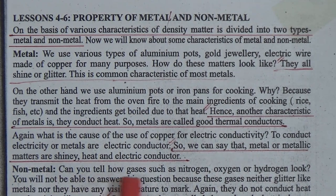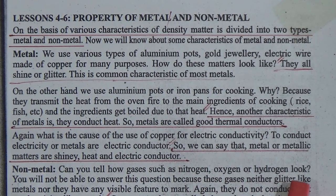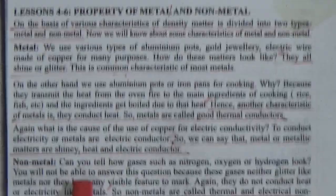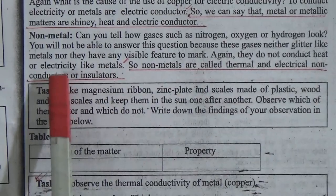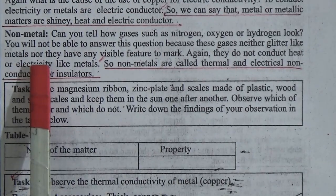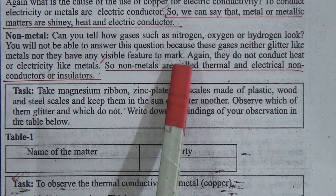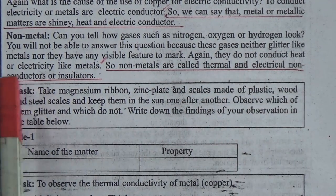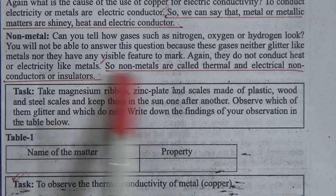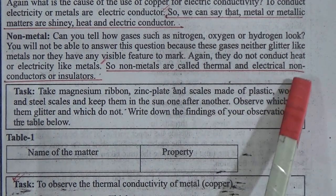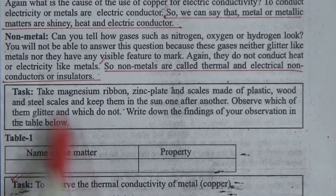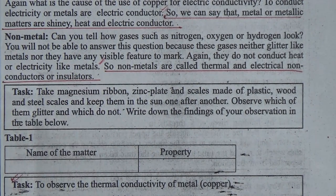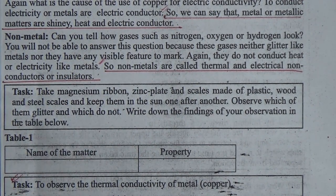Non-metals: gases such as nitrogen, oxygen, or hydrogen neither glitter like metals nor have any visible feature to mark. They do not conduct heat or electricity like metals. Therefore, non-metals are called thermal and electrical non-conductors, or insulators.